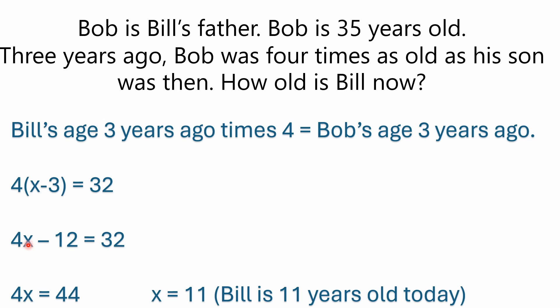We can simplify that down: four x minus 12 equals 32, four x equals 44, which leaves us with x equals 11. Now remember, x represents Bill's age today, which is 11.